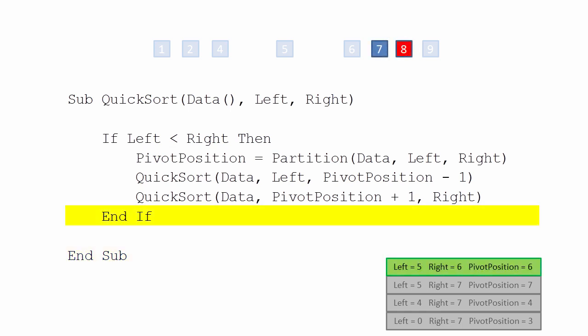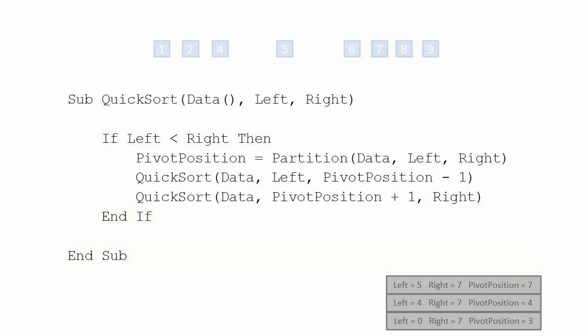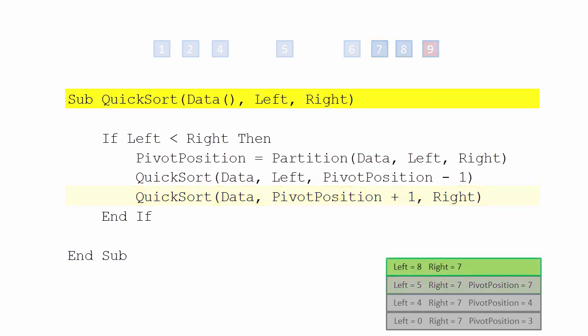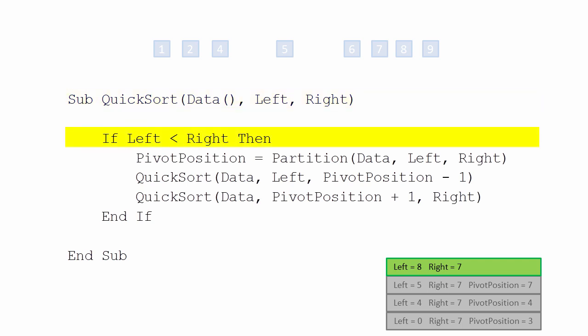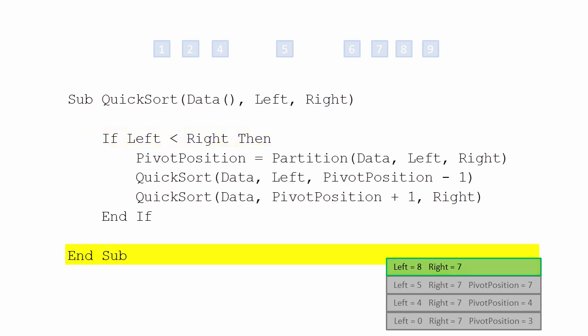And the invocation that spawned these single-item lists can now come to an end. One remaining pivot value needs to be checked for a right-side sublist, so quicksort is invoked for the final time. But such a large left pointer value can only mean one thing: this invocation can end without further ado.